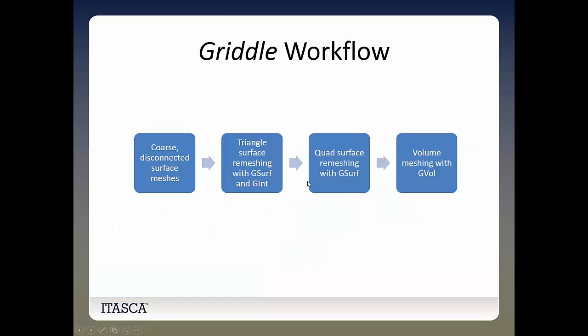The Griddle workflow is straightforward. You work with Rhino meshes — not Rhino surfaces, though you can generate meshes from surfaces and solids. Once you get the surface meshes the way you want them, you fill the area inside with volume elements. Typically you start with some coarse disconnected surface meshes — perhaps from a mining or civil project or scan data — clean that up using Rhino's meshing tools or Griddle's intersector, then apply triangle or quad surface remeshing, and finally volume mesh it.